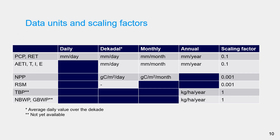Here you find an overview of the different data units for the different layers. Except for the decadal layer, the unit is the paired time step of the temporal resolution of the layer. The decadal values are provided in average values per day, and when you need the total value for the decade, you have to multiply the value with the number of days in that decade. Also here you can see the scaling factor for each of the layers.